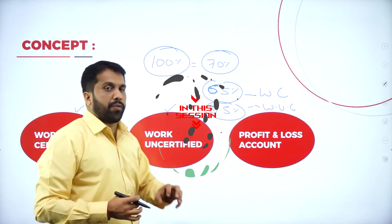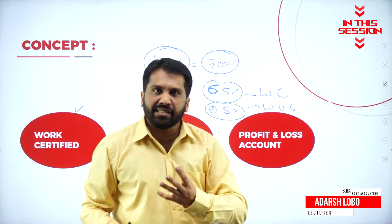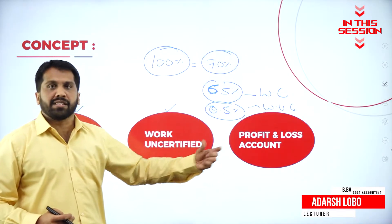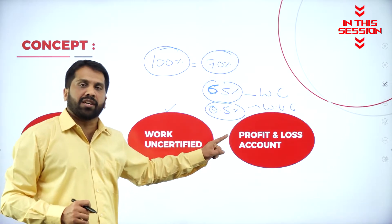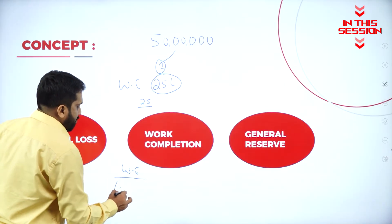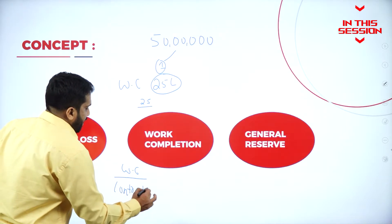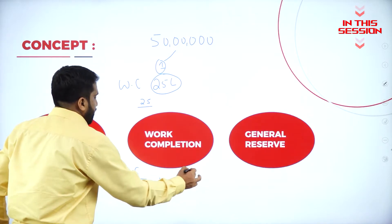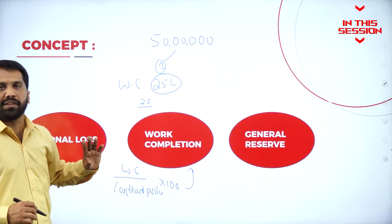Work certified means which is certified by the engineer. Work uncertified means which is not yet certified by the engineer. Work certified divided by contract price into 100 — this is the formula for work completion.